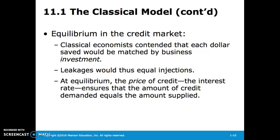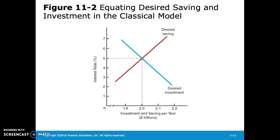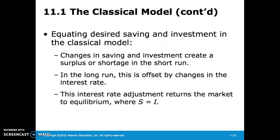A classical economist assumes that each dollar saved would be matched by business investment, so the leakages would actually equal the injections, and equilibrium would exist at the price or interest rate of credit. In this graph, we can see that the equilibrium interest rate leads to a point where desired savings and desired investment are equal. While changes in saving and investment create a surplus or shortage in the short run, in the long run the interest rate will adjust and bring the market back to equilibrium.